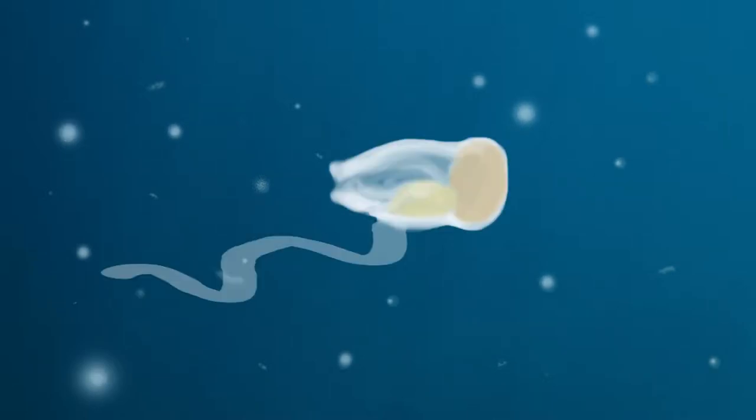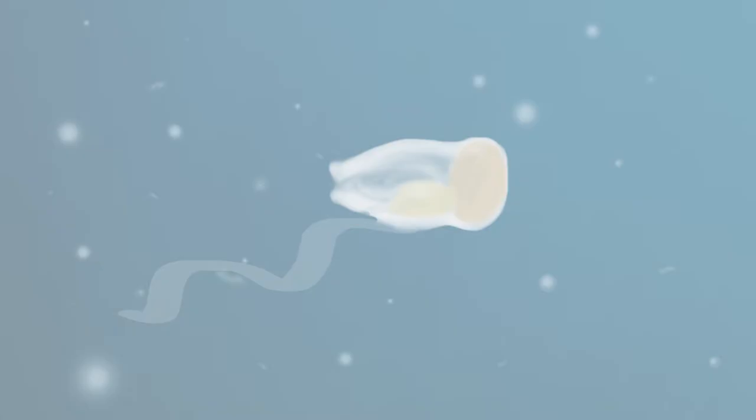Oicaplera dioica lives in oceans across the globe. This small tadpole-like creature secretes a mucus from its skin and then, beating its tail, inflates the mucus into an elaborate home.